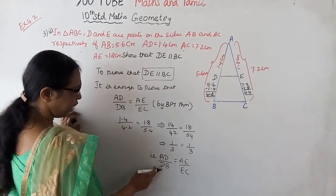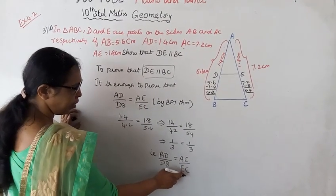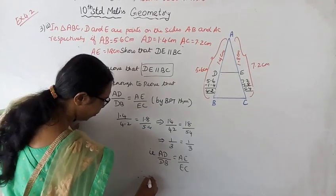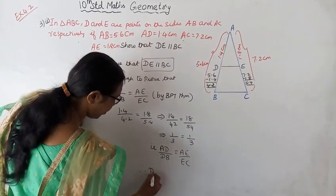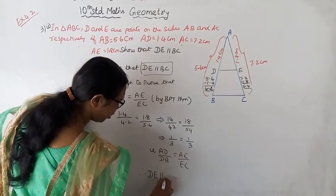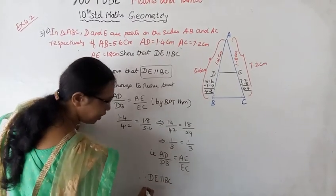To prove the problem, we showed that AD by DB equals AE by EC. Therefore, in the given triangle, DE is parallel to BC. Hence proved.